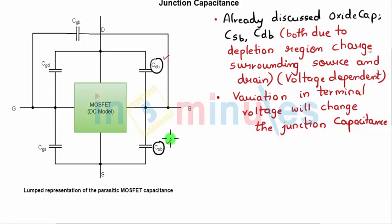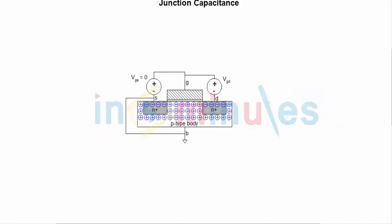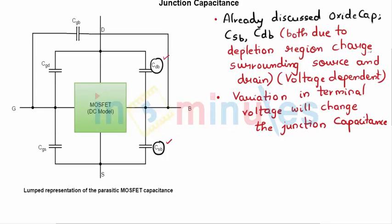Both are due to the depletion region charge surrounding the source and the drain. The source and drain would have a depletion region charge surrounding them. The N of source and P of body, and N of drain and P of body, ideally form a reverse-biased PN junction diode for normal operation. We know that a depletion region is created, and we are talking about the capacitance due to that depletion region charge.